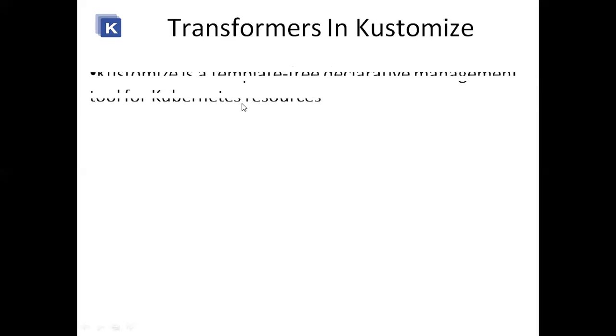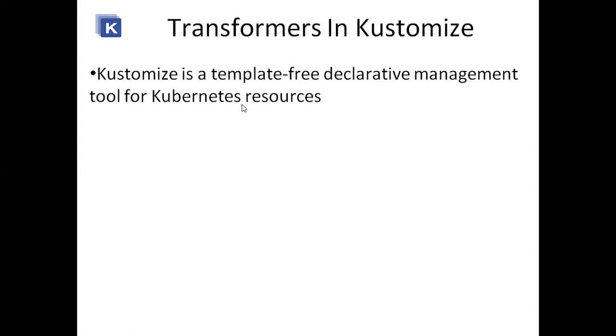Hello everyone. In the previous session we have seen what Kustomize is, how its architecture works, its overlays and base. Now we will see Transformers in Kustomize. Kustomize is a template-free declarative management tool for Kubernetes resources. For Kubernetes resources there are two tools we use: Helm and Kustomize, but Helm is the complex one as we have to prepare a chart in it, while Kustomize is the simpler one.